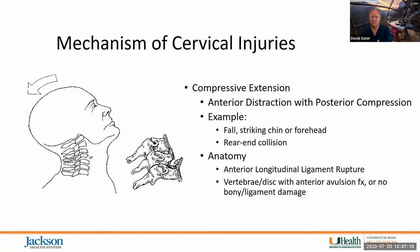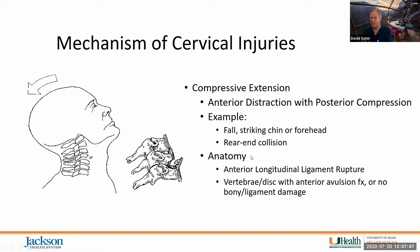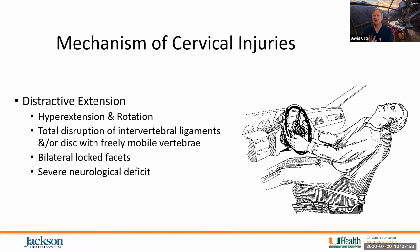Compressive extension occurs, for example, when someone is rear-ended and their head is thrown backward. You get compression at the posterior elements but anterior longitudinal ligament rupture. If the person had a rotatory component — such as looking in the rearview mirror when they heard brakes — then you have distractive extension with rotation and again a locked facet scenario.